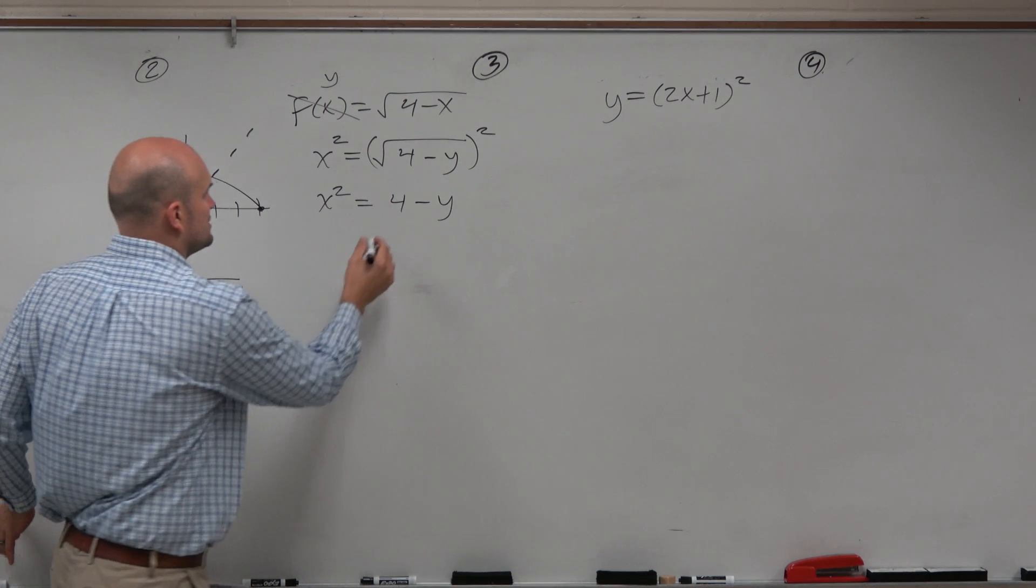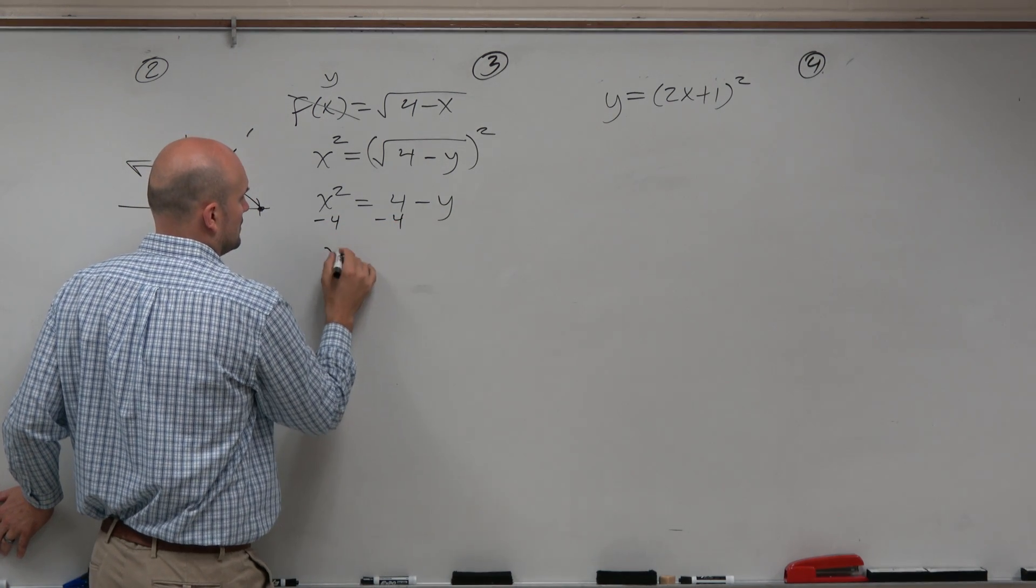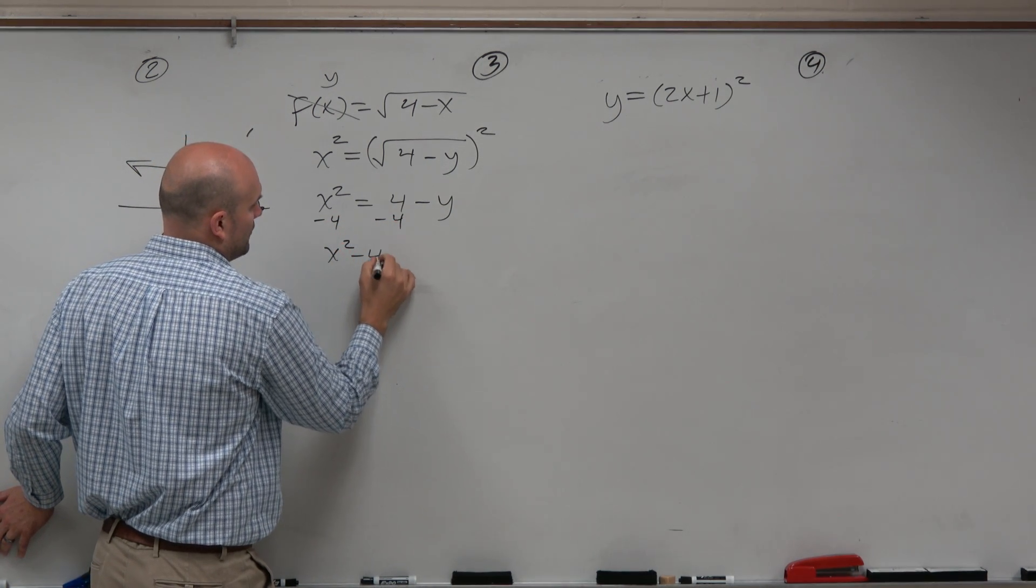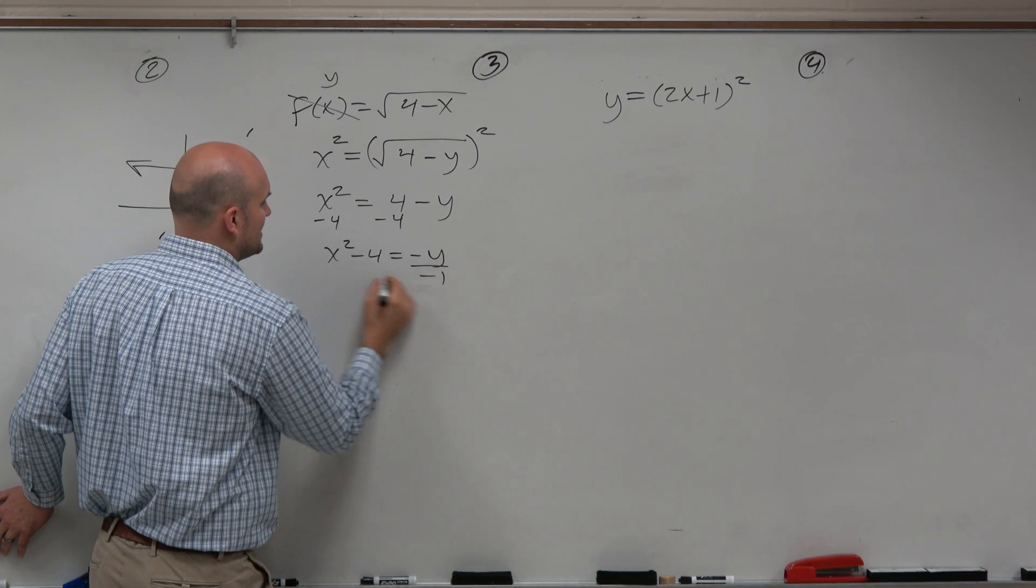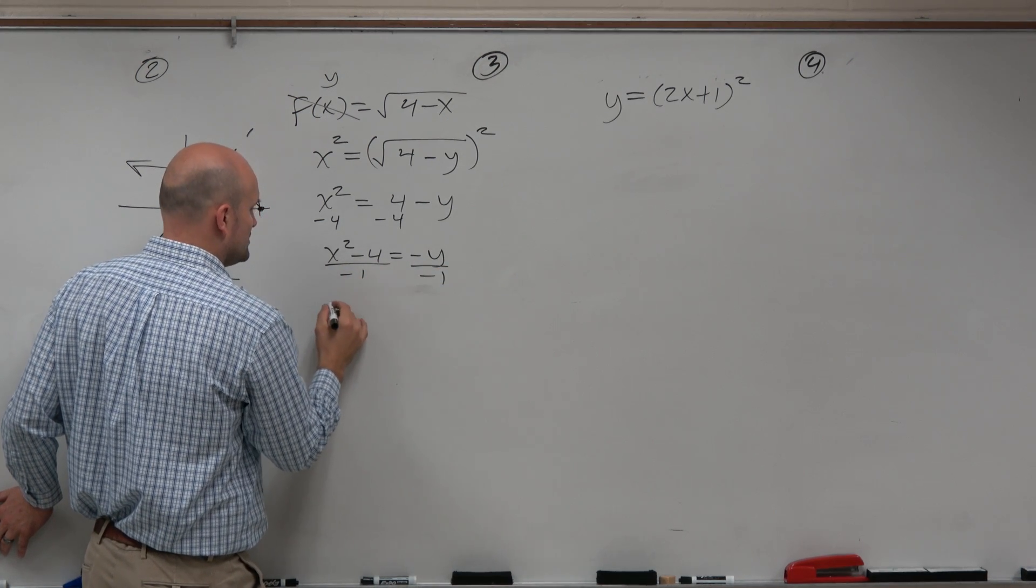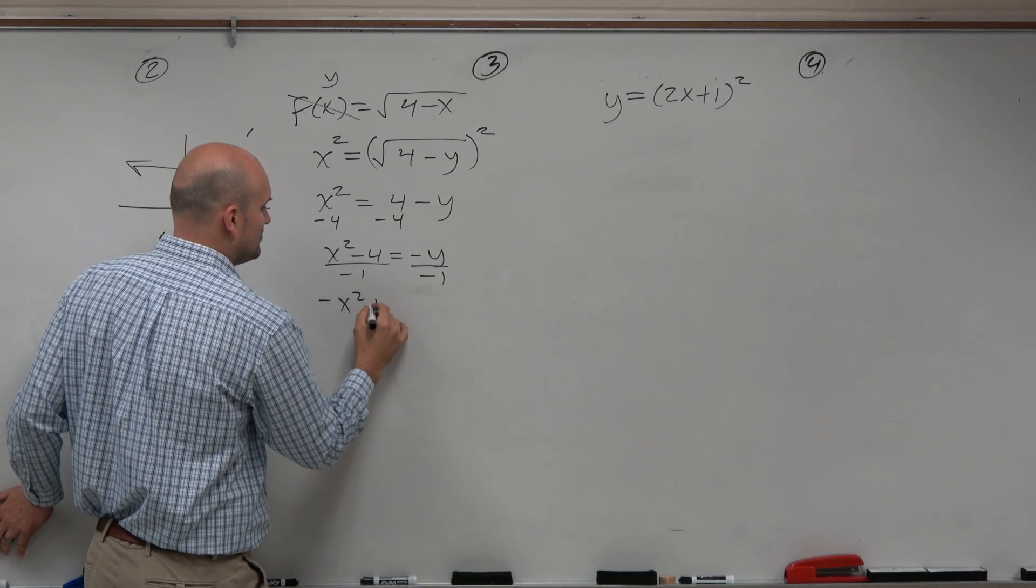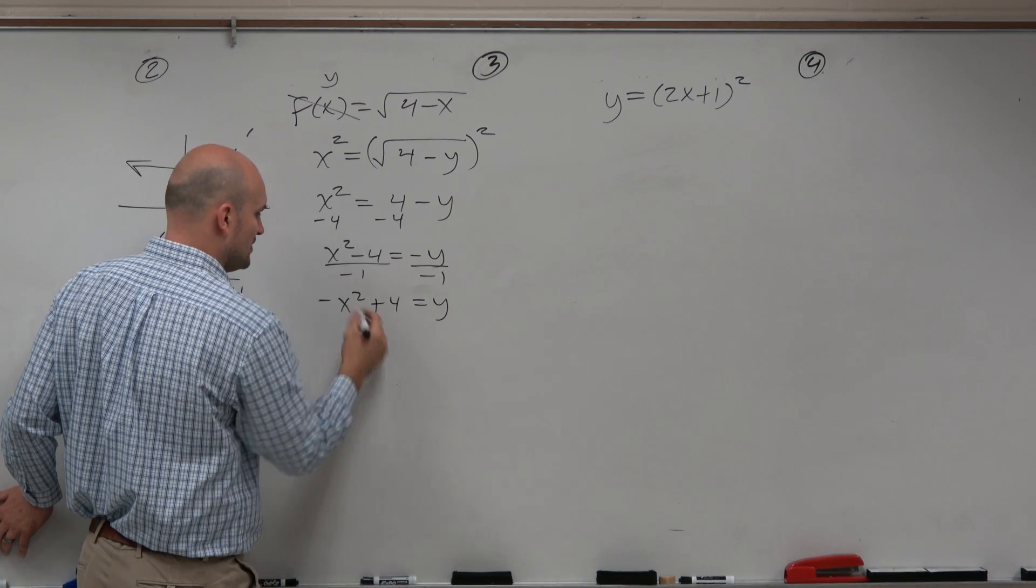Let's subtract the 4. I get x² minus 4 equals negative y, divide by negative 1, divide by negative 1. So this turns into negative x² plus 4 equals y. Let's flip that over.